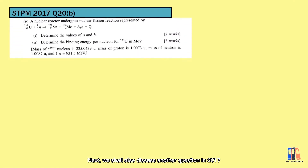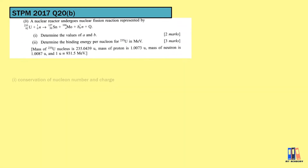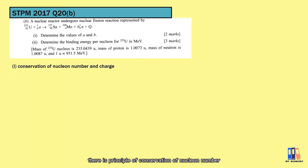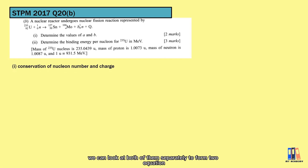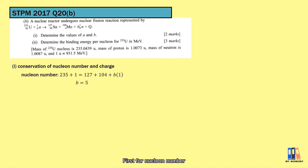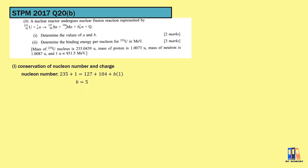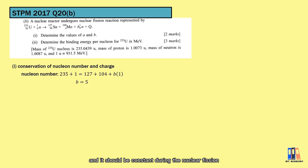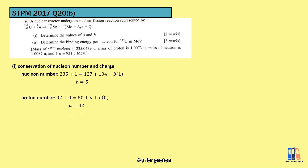Next is a question from 2017 about nuclear reaction, applying the principle of conservation of nucleon number and charge (proton number). We look at both separately to form two equations. For nucleon number, we solve for B, which equals 5, since the total nucleon number of 236 must be conserved during fission. For proton number, conserved at 92, we obtain A = 42.